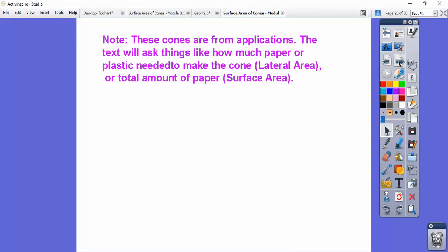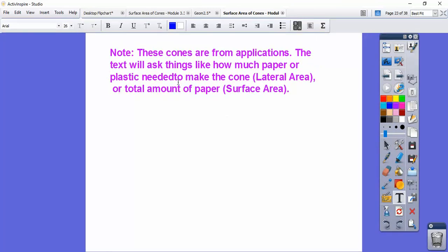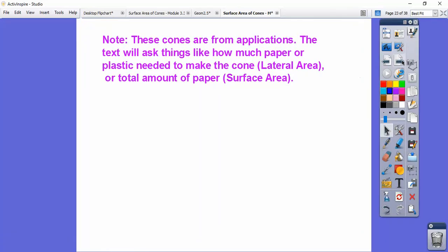Alright, so these come from application problems. The textbook will ask you things like how much paper you need to make a snow cone. That would be a lateral area, to make the cone. Or how much total amount of paper. If you're going to do the top also, if you see total, that's all surface area.